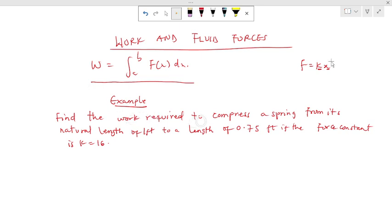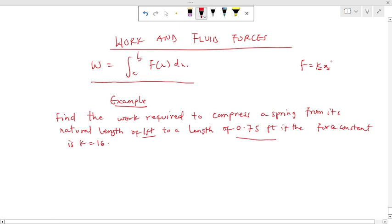Find the work required to compress a spring from its natural length of 1 feet to a length of 0.75 feet if the force constant is 16.